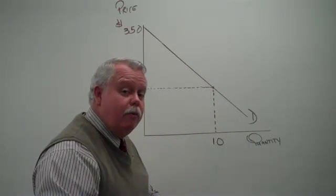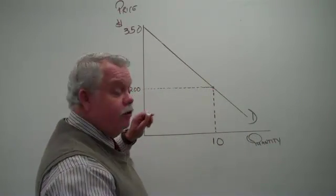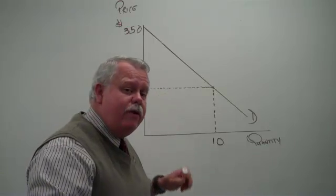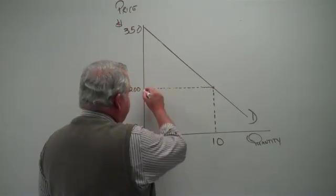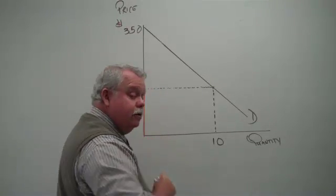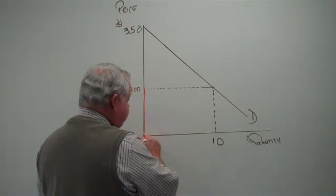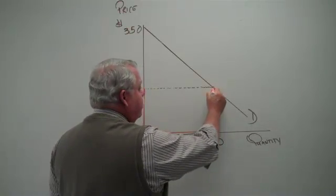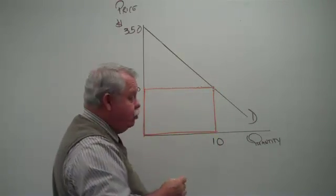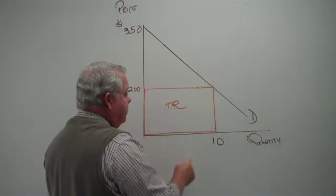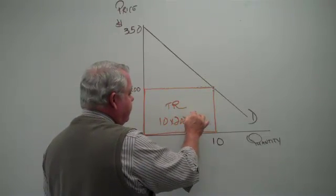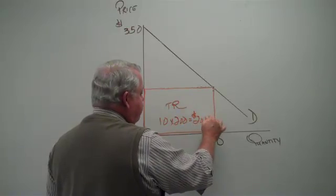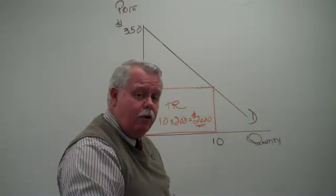Now, the consumer surplus is one part of this, and then the total revenue is another. The total revenue is the price the seller receives times the number of units he sells, and so this rectangle in orange represents total revenue, and it is 10 units times $200. The seller receives $2,000 in total revenue.